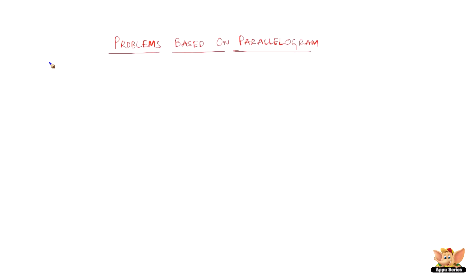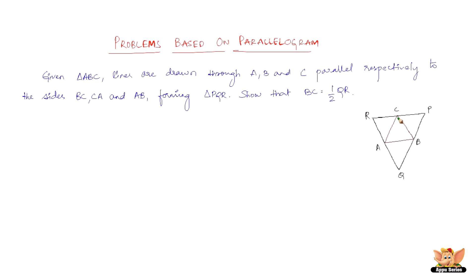Here we will solve more problems based on the parallelogram. The question goes like this: given triangle ABC, lines are drawn through A, B, and C parallel respectively to the sides BC.